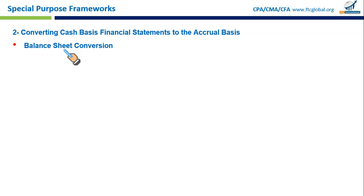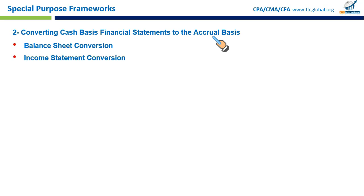For balance sheet conversion from cash to accrual basis, you need to include all assets and liabilities that were not accounted for in cash basis. Cash basis only records transactions involving cash paid or received, but accrual accounting requires recording assets and liabilities even if no cash has been received or paid — such as accounts receivable, money owed to the business, and accounts payable, bills the business still needs to pay.